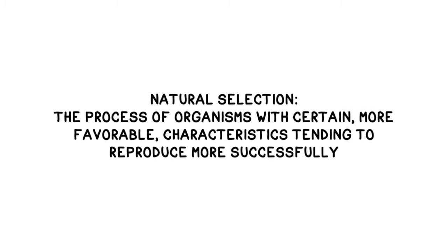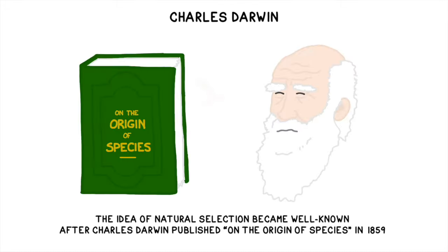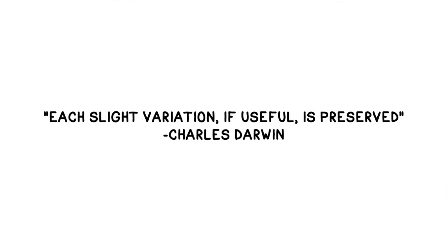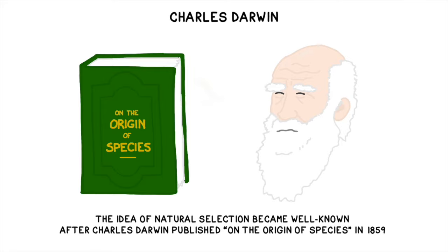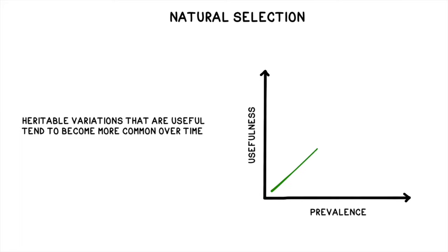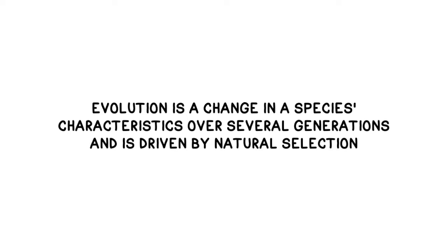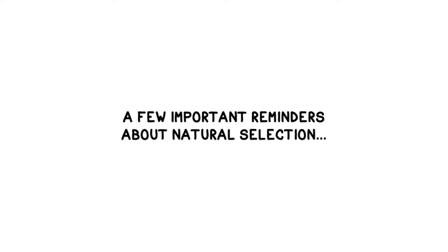When creatures with certain heritable characteristics tend to reproduce more successfully, we call it natural selection. The idea of natural selection became famous when Charles Darwin published his work On the Origin of Species in 1859. He proposed that each slight variation, if useful, is preserved. While some of his ideas are definitely outdated, his theory of natural selection has stood the test of time. Natural selection is one mechanism that drives a population's evolution over time. Evolution is a change in a species' characteristics over several generations and is driven by natural selection.